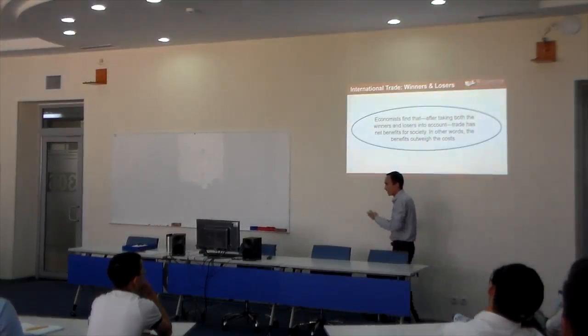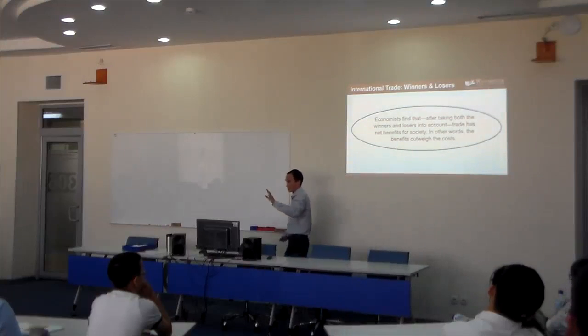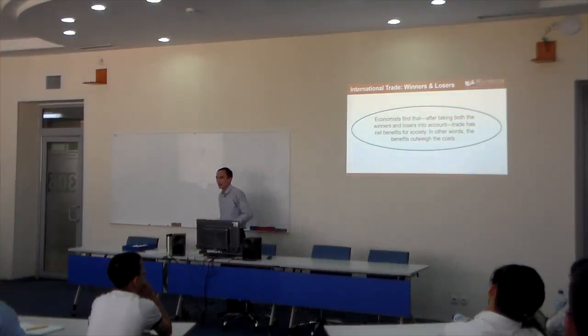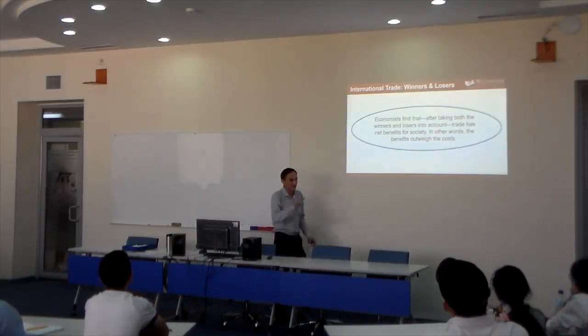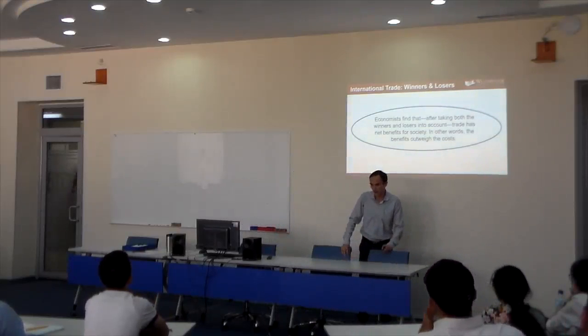So economists, they know there are benefits of globalization and there are costs. They took the scale and put on each side of the scale: benefits, benefits, benefits, costs, costs, costs. And they figured out that benefits are much more than costs.